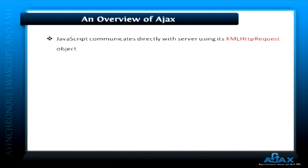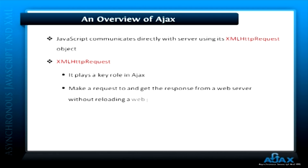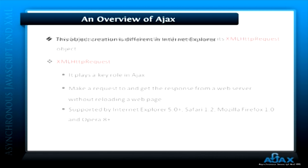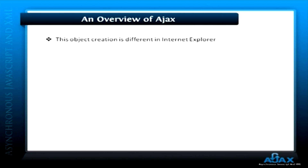JavaScript communicates directly with servers using its XMLHttpRequest object. This XMLHttpRequest object plays a key role in Ajax — it makes a request to and gets the response from a web server without reloading a web page. This object is supported by Internet Explorer 5.0+, Safari 1.2, Mozilla Firefox 1.0, and Opera 8+. Note that this object's creation is different in Internet Explorer, which we will discuss in upcoming tutorials.